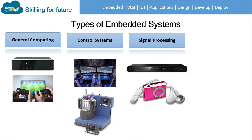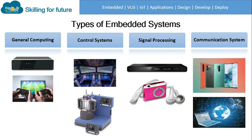The fourth type is communication systems — systems involved in communication purposes, like mobile phones and the internet that we use daily.